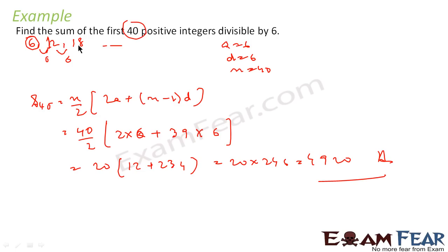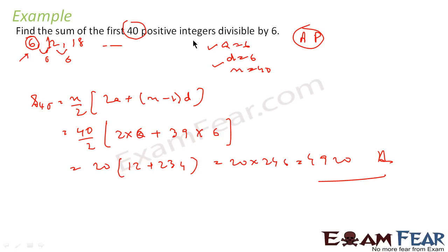All numbers divisible by 6 form an AP with A=6 and D=6. The least number is 6, then 12 and 18. N=40 is already given, so we use the summation formula to get the answer 4920.